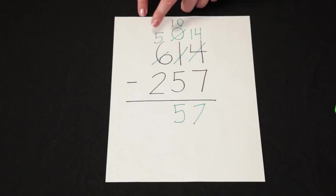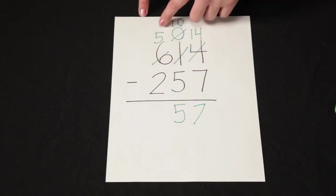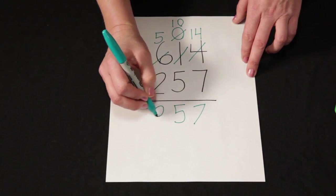Now I'm going to subtract my hundreds. 5 minus 2. 5 minus 2 is 3.